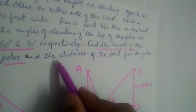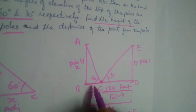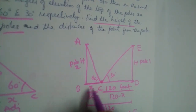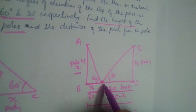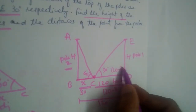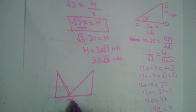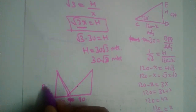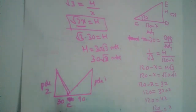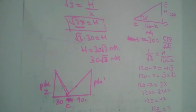The question also asks for the distances of the point from the poles. We got X equals 30, so the point is 30 meters away from pole 2. And 120 minus 30 equals 90, so the point is 90 meters away from pole 1. Therefore, the point of observation is 90 meters away from pole 1 and 30 meters away from pole 2.